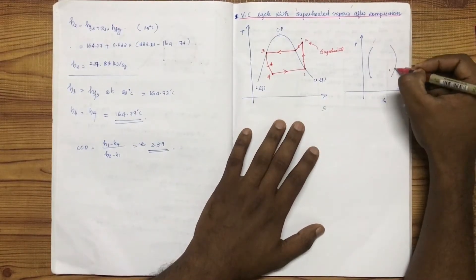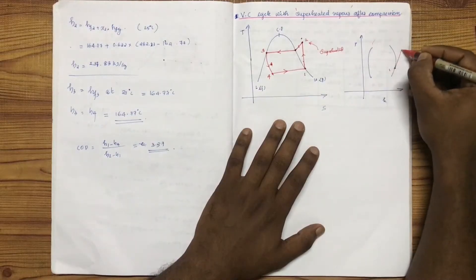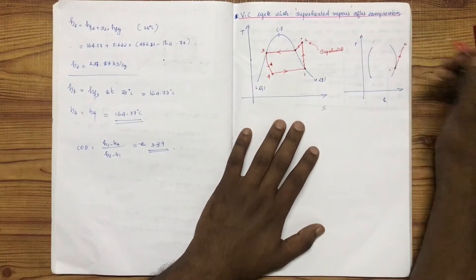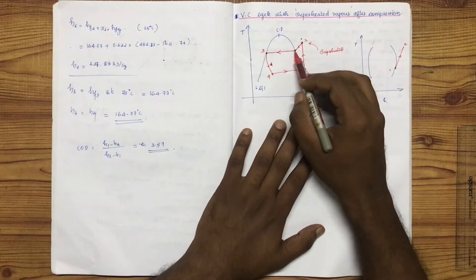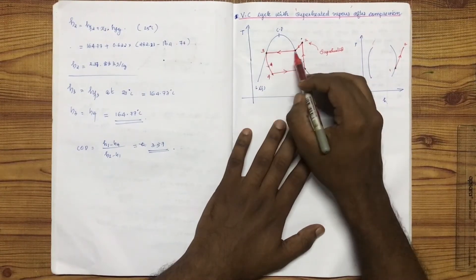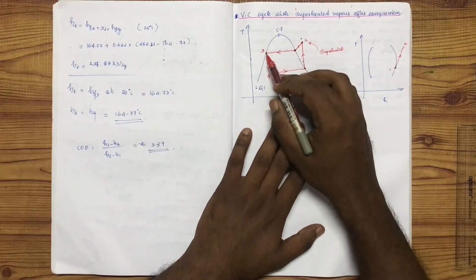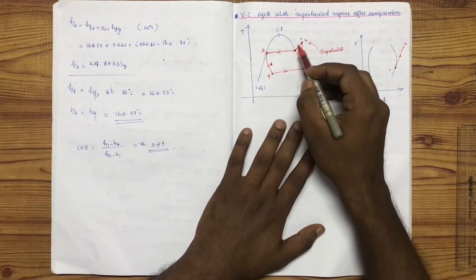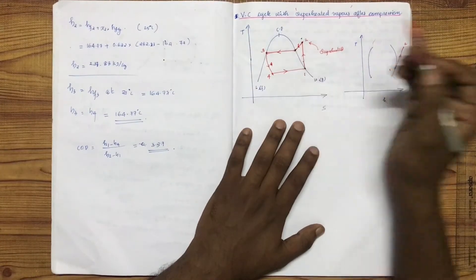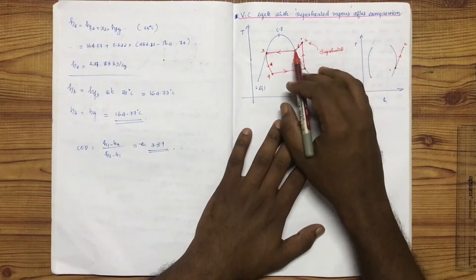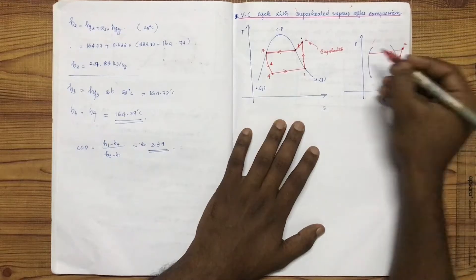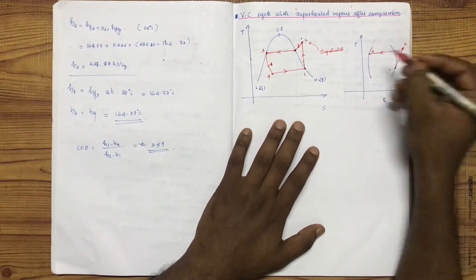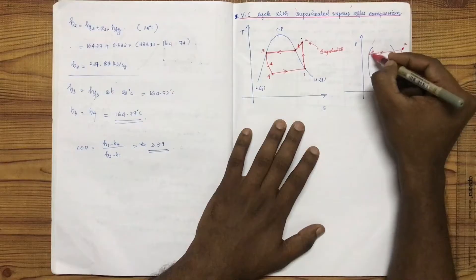We can use the P-H diagram to increase the enthalpy. The process from 2 to 3 shows increasing enthalpy. The temperature is constant during this process — constant temperature through the condensation phase.